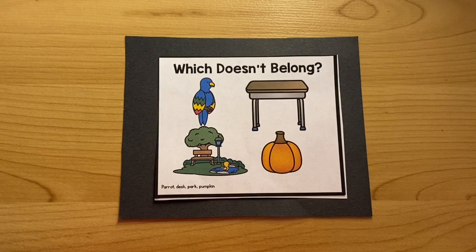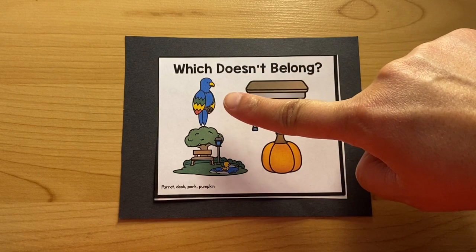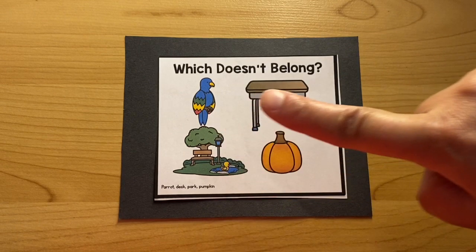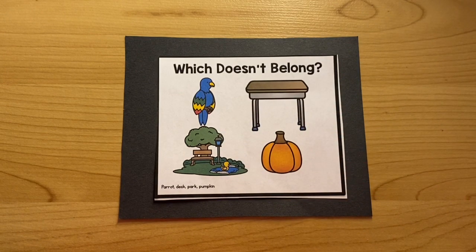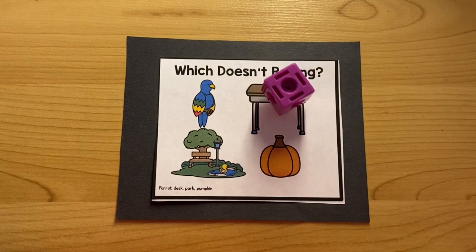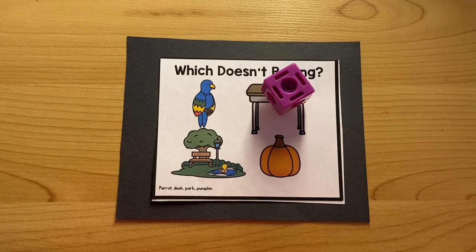Here's our first one. Parrot. Desk. Park. Pumpkin. Which word doesn't belong? Desk. That's right. Desk doesn't belong because desk begins with the sound D. And the rest of the words begin with the sound P. Good job.